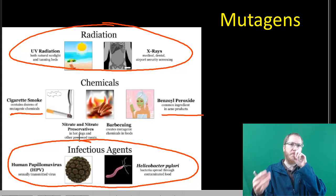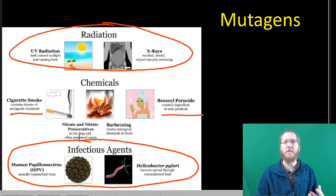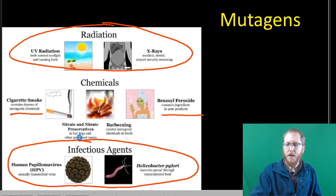Certain bacteria and viruses can act as mutagens, with HPV being probably the poster child. There are now vaccines for HPV because it is the cause of most cervical cancer cases in women and many ovarian cancer cases. They're trying to vaccinate people not because HPV's symptoms are so dangerous on their own, but because HPV can lead down the road to cancer, which is a very big deal.